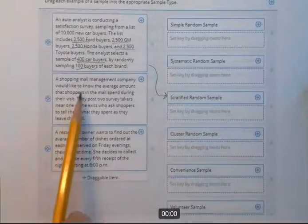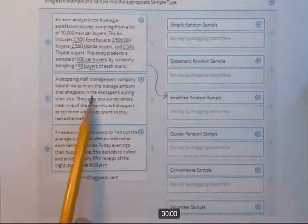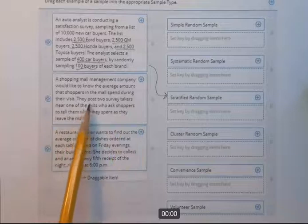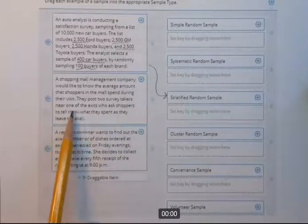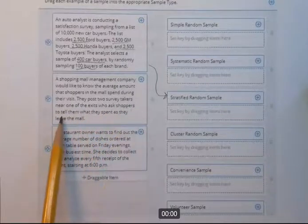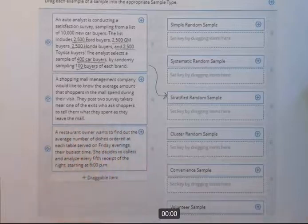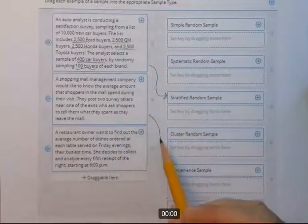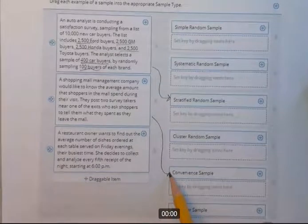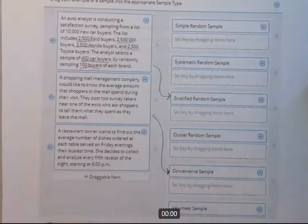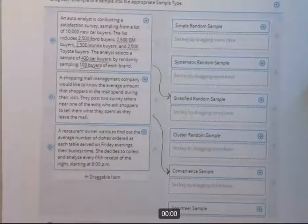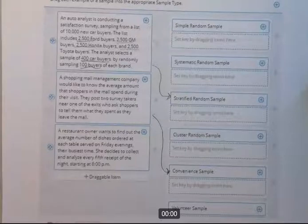A shopping mall management company would like to know the average amount that shoppers in the mall spend during their visit. They post two survey takers near one of the exits who ask shoppers to tell them what they spend as they leave the mall. So that I think you would know is convenience. Anytime you're taking a survey, standing at a location and taking a survey, that's like the students standing in the cafeteria.